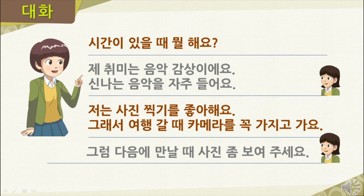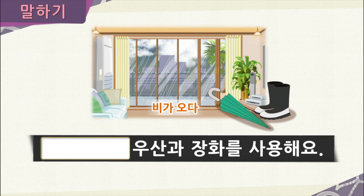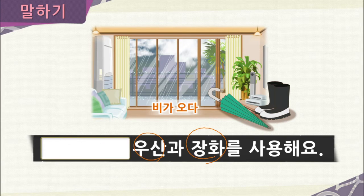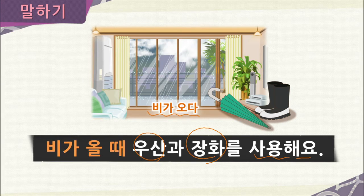Now it's time for speaking practice. We will practice using 을 때. We will look at the picture and complete the sentence. We have 우산 (umbrella) and 장화 (rubber boots), and the verb 사용해요. When do you use these items? When it rains — 비가 오다. So using 을 때: 비가 올 때 우산과 장화를 사용해요 — I use my umbrella and rubber boots when it rains.